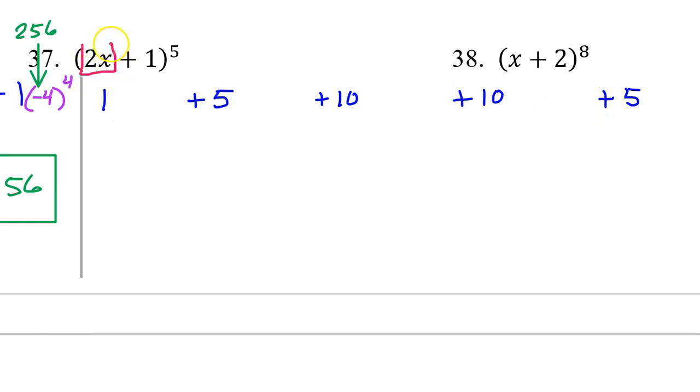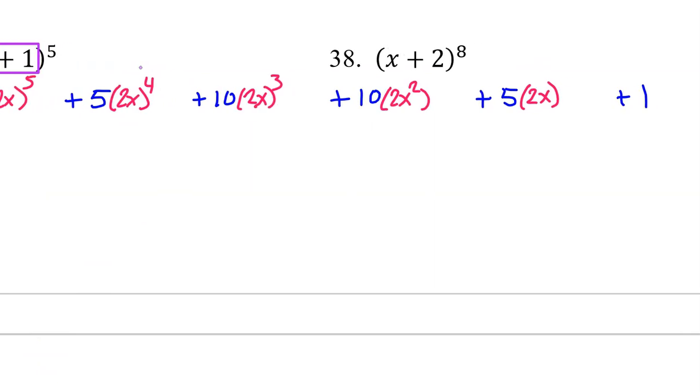Now we grab the term from the left, and we put it on the left. So we have 2x to the fifth power, and then we do that over and over again, decreasing the power every time. Now we grab the term on the right, and we put that on the right. So I'm going to have times 1 to the fifth power, 1 to the fourth power, 1 to the third power, 1 squared, and 1.